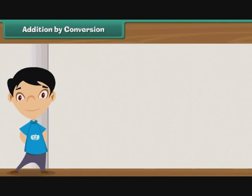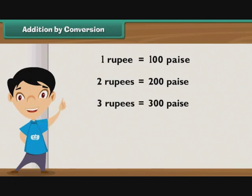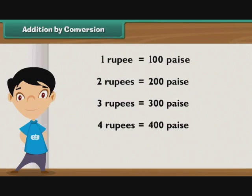Addition by conversion. You are aware that one rupee is equal to 100 paise. It means two rupees are equal to 200 paise, three rupees are equal to 300 paise, four rupees are equal to 400 paise, and five rupees are equal to 500 paise.